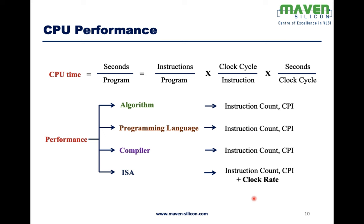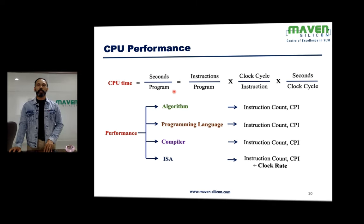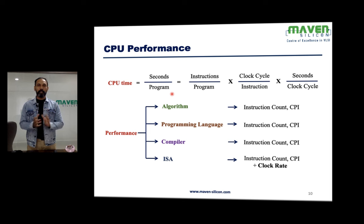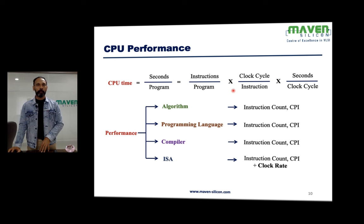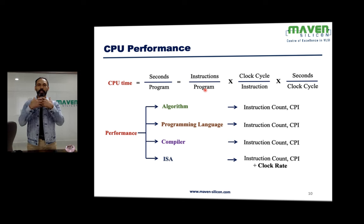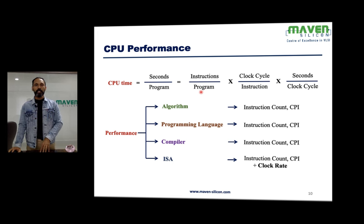CPU performance, or overall CPU time, is defined as seconds per program — how many seconds it takes to execute a particular program. This is calculated through a formula: the number of instructions per program, which the compiler converts from any application, multiplied by CPI (clock cycles per instruction), multiplied by seconds per clock cycle.